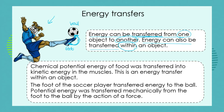Where did the foot get the energy from in order to kick the ball? Our soccer player ate a very healthy diet, and that chemical energy in the food, through processes of digestion and metabolism inside his cells, was transferred within the object of the soccer player — from the food to the foot. The chemical potential energy of the soccer player's food was transferred into kinetic energy in the muscles, which is an example of energy transfer within an object.